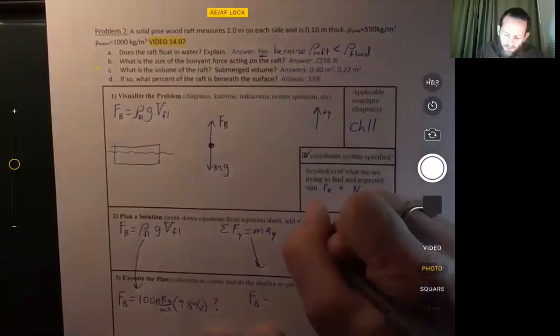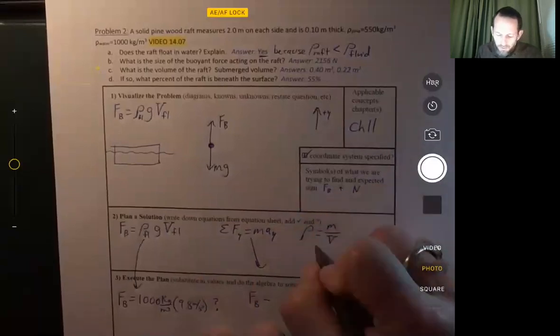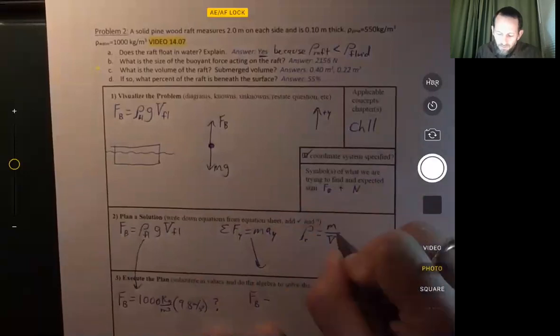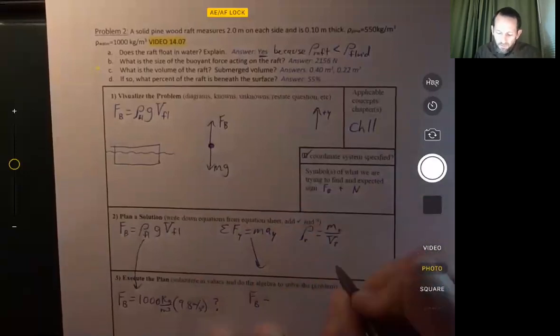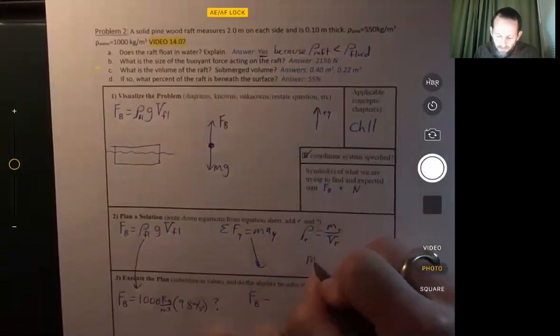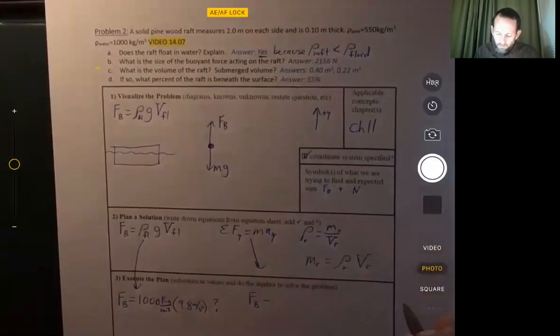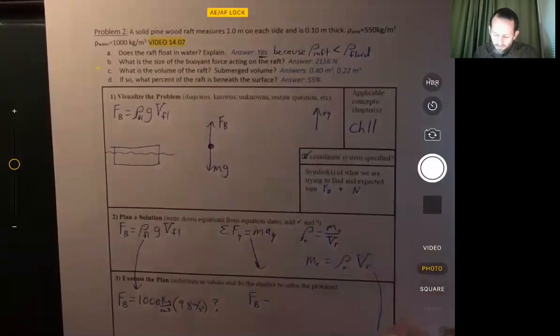Density is equal to mass divided by volume. So if we apply this to the raft, then we can say, okay, trying to find the mass and the mass of the raft equals the density of the raft times the volume of the raft. Oh, let's see. Where do we want to put this? We'll come down here.